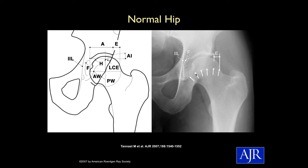More importantly, look at the acetabular walls and this concept: the floor of the acetabular fossa, F, should stay lateral to the ilio-ischial line. If the fossa comes up to that line, it's called coxa profunda — a deep socket. If the femoral head actually passes medial to that line, that's protrusio acetabuli. These indicate potential pincer-type impingement risk.